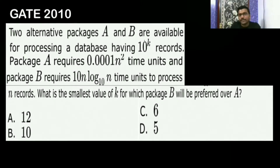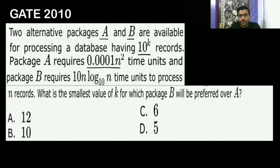Two alternative packages A and B are available for processing a database having 10 to the power k records. Package A requires a certain amount of time and package B requires a certain amount of time to process N records.